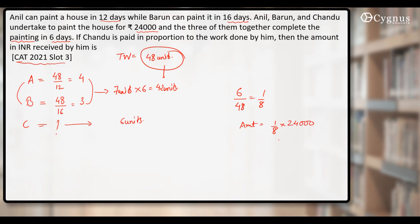24,000. Now 1 by 8 of 24,000 will be equal to 3,000 rupees. So the answer for this question becomes 3,000.